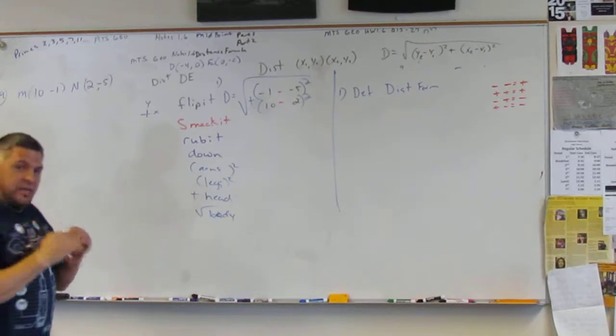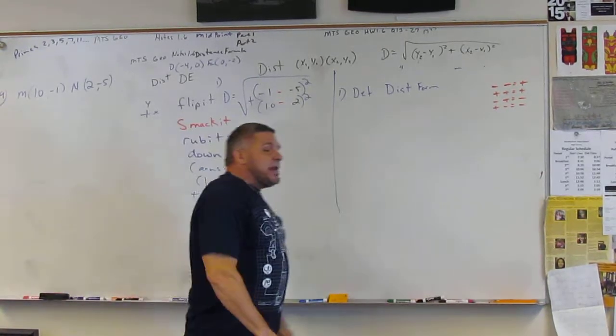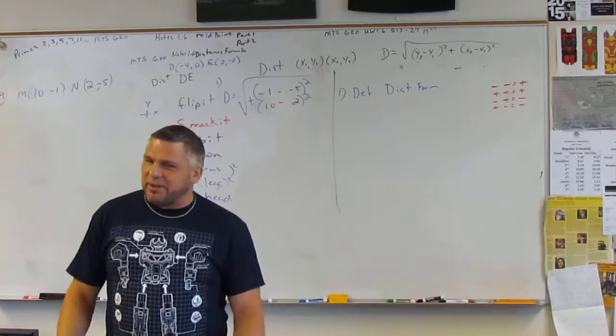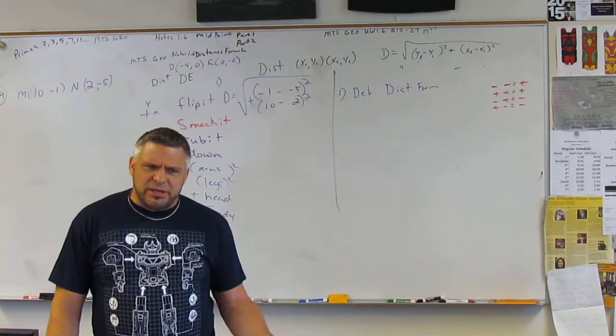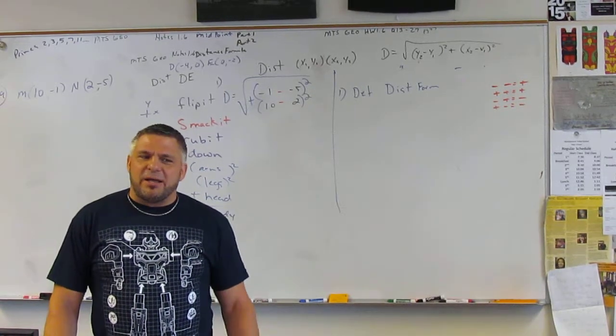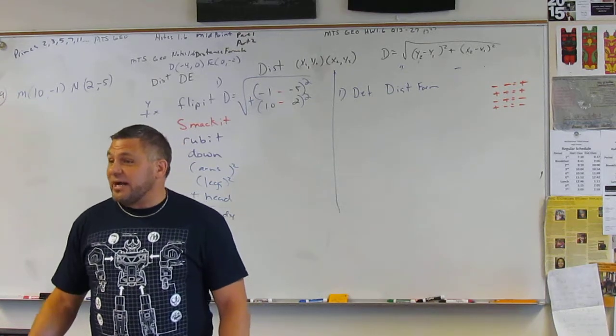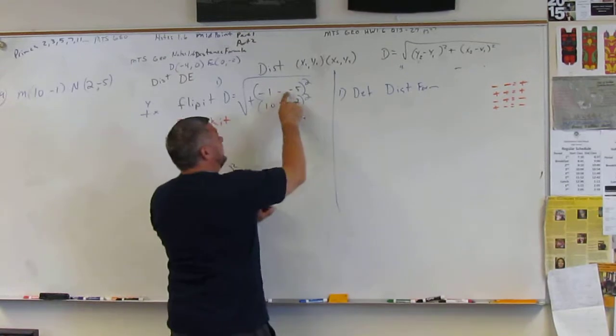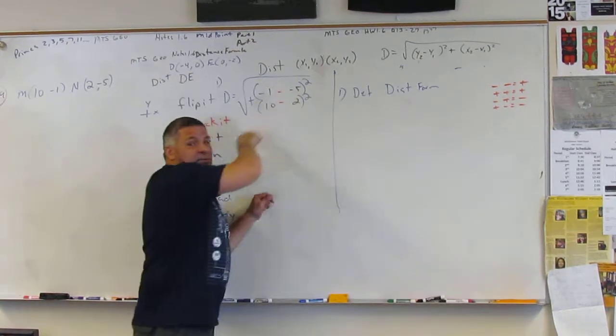Whenever you have two negatives, you got a plus. Now, that doesn't mean you're adding two negatives. Because a lot of students will come at me with the, 'Well, you say every time I have two negatives.' Well, not negative 2 plus negative 5. I'm saying when they're right next to each other, like this. Now, it's a plus.